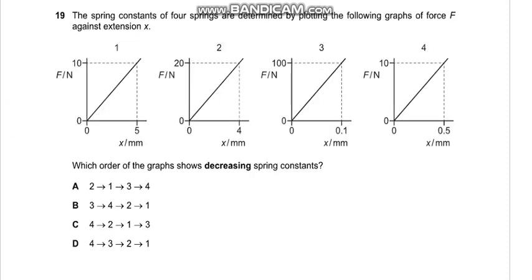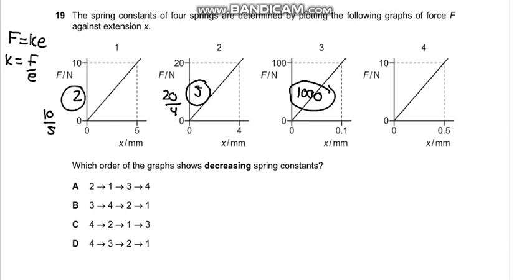Question number 19 says the spring constant of 4 springs are determined by plotting the following graphs. Which order of the graph shows the decreasing spring constant? The spring constant is F equals KE and the spring constant is F over E. So just divide and find the spring constant. Over here we get F divided by E, 10 divided by 5, so this becomes 2. This becomes 20 divided by 4 which becomes 5. 100 divided by 0.1 this becomes 1000. And this is 10 divided by 0.5 so this becomes 20.